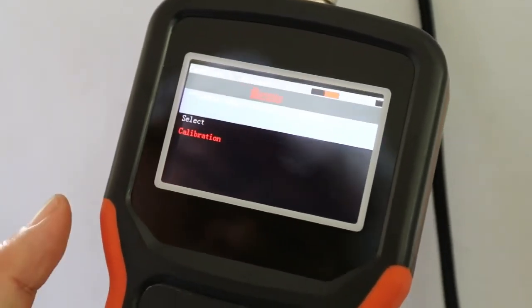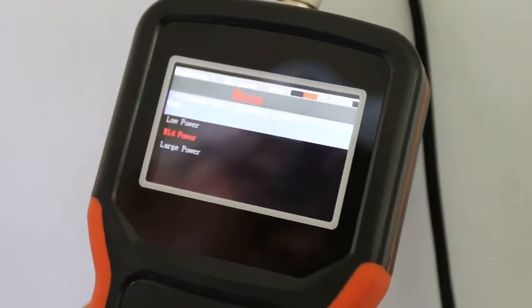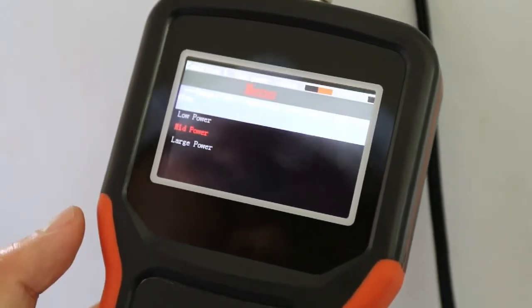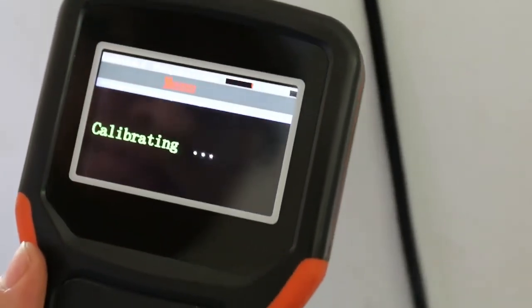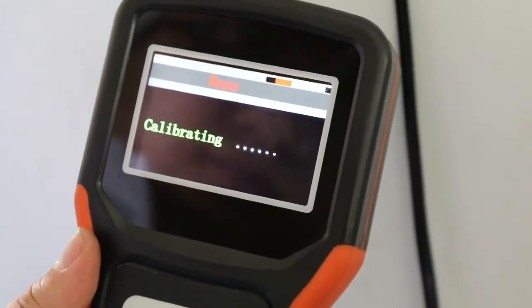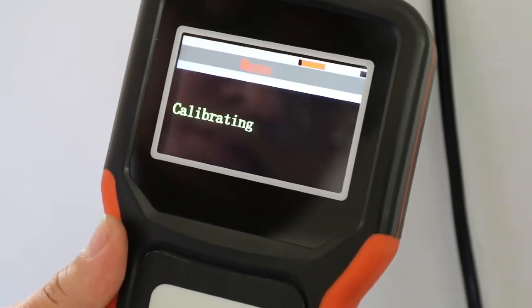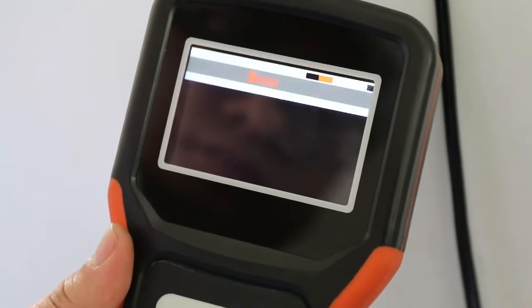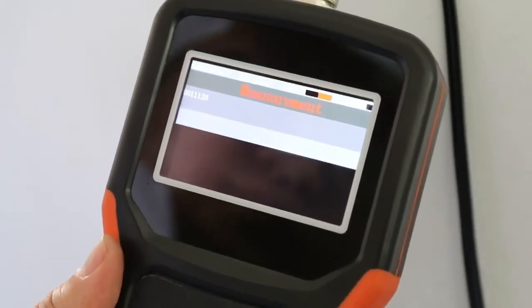In the calibration menu, select from the 3 levels of power available according to the size and thickness of the tank. After the calibration, it will automatically enter the measurement interface. The result will be displayed on the screen.